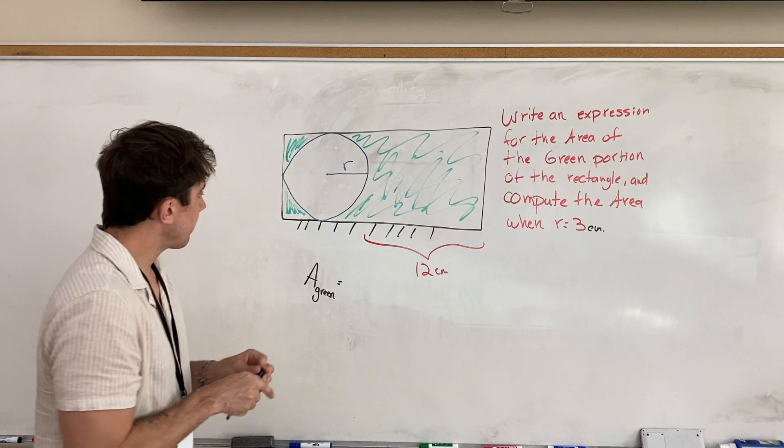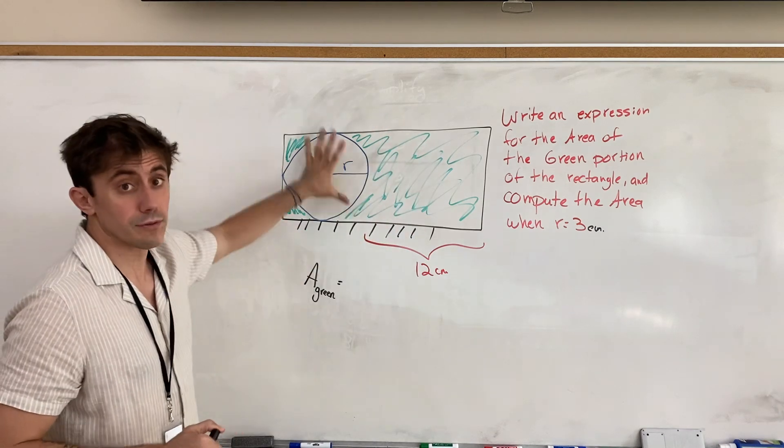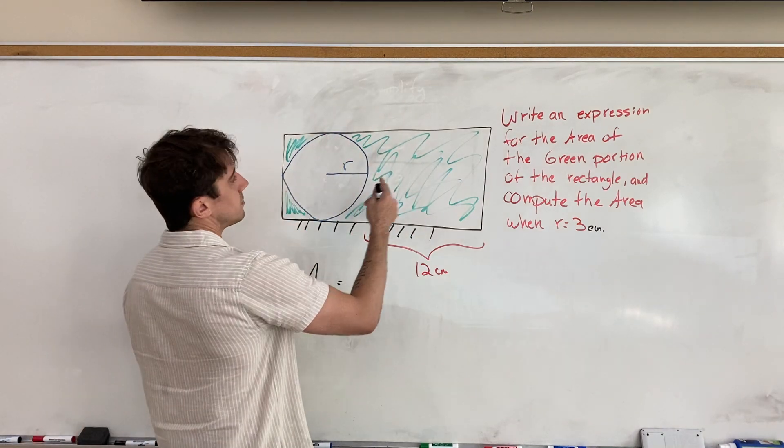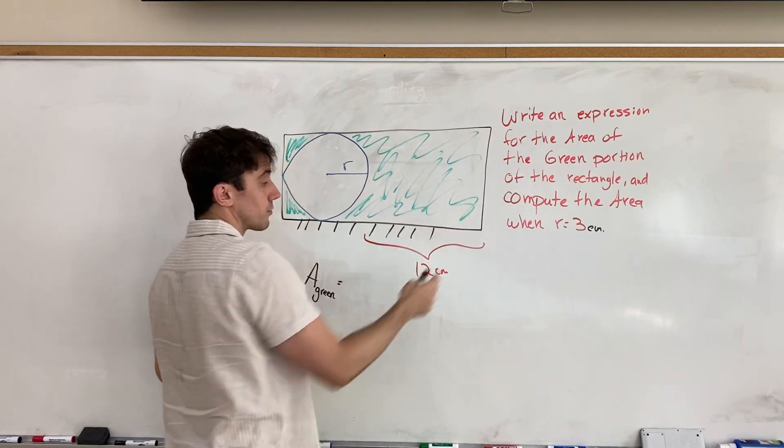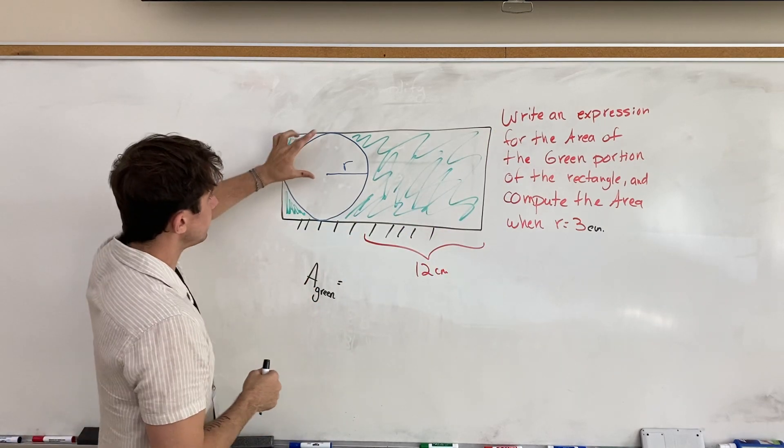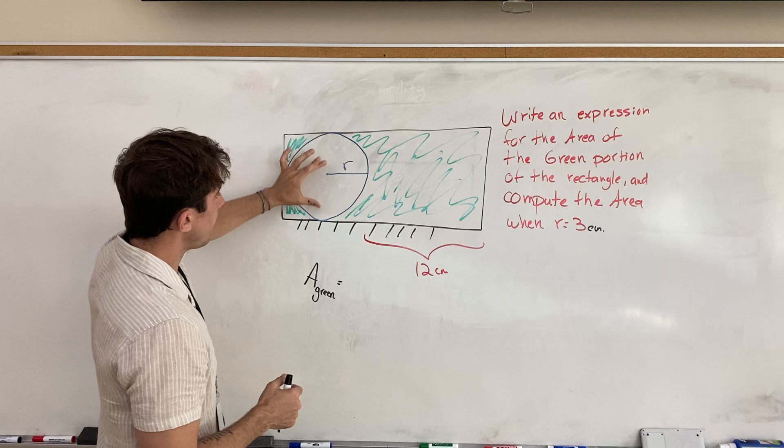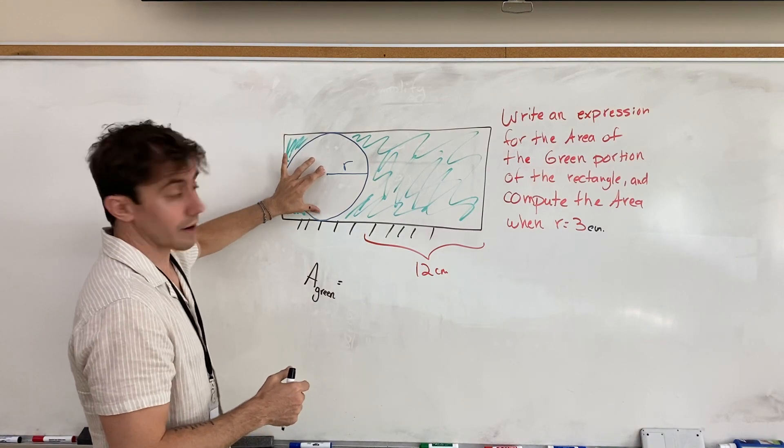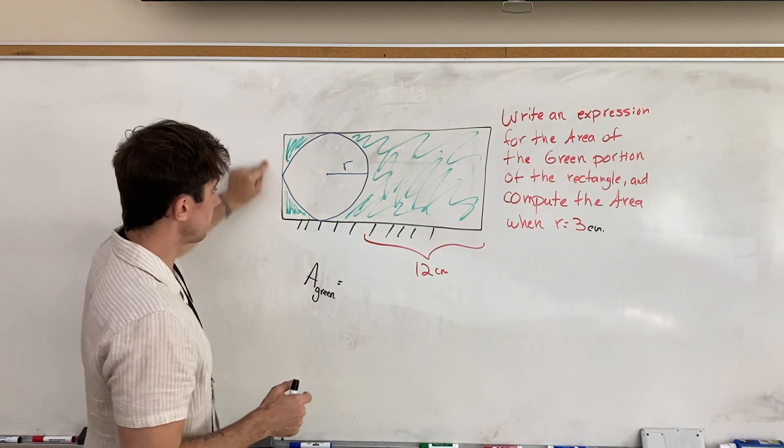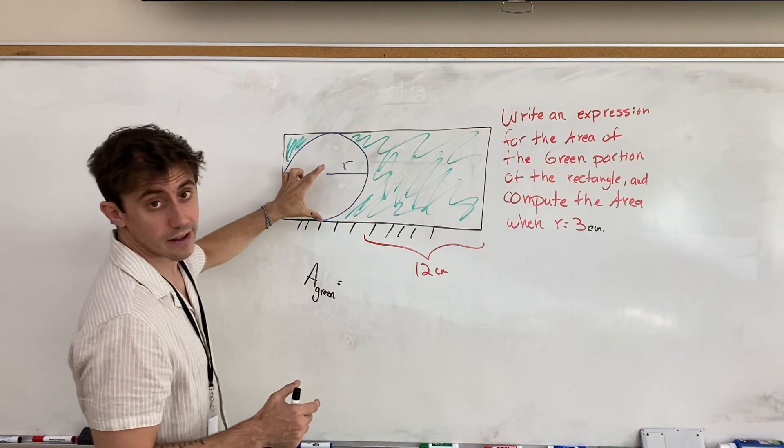So the area of the rectangle without the circle would be, now, the vertical height, or the width, is going to be one radius and a second radius. So altogether, this vertical height is going to be two radii.